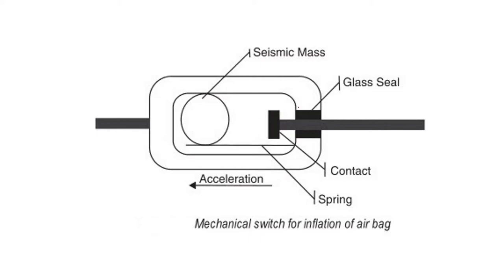As an example of a mechanical switch, here you can see there is a glass seal and a contact. This is your seismic mass, which detects spring deformation — this is the spring. Whenever there is a dash or crash of the vehicle, this switch gets activated and gives a signal to the airbag to fill in with gas. The airbag is then filled with gas and comes in between the person and the front part of the car.